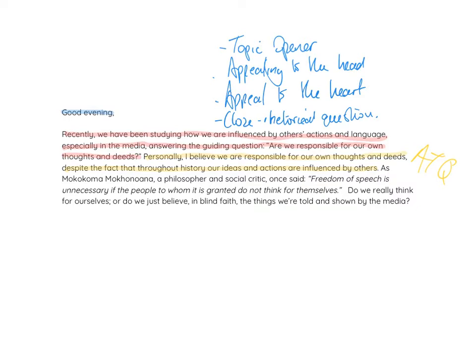I've almost missed out the appeal to the heart because I've appealed to the head and I've actually used a quotation here that we looked at in class. What's really important about that is it adds credibility to what I'm actually saying, because it shows that somebody else - in this instance a philosopher and social critic, somebody who sounds like they know what they're on about - actually agrees with me. And a second really powerful reason for including this quotation is it allows me to refer back to it at the end of my speech - to conclude by coming back to that really powerful quotation.